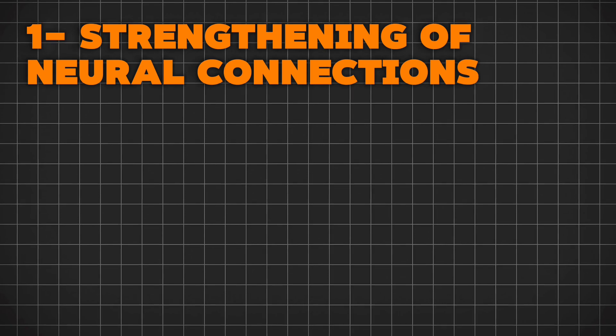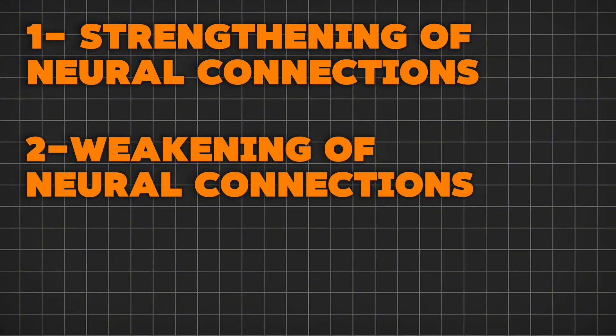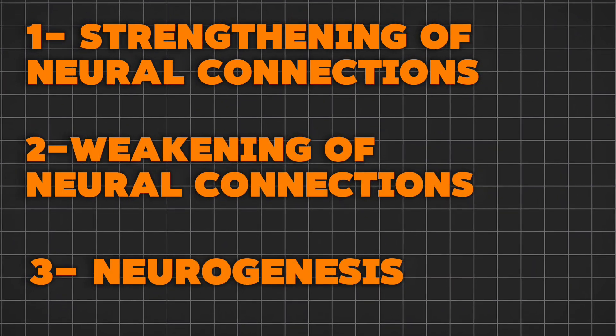So, the three ways are the strengthening of neural connections, second, the weakening of neural connections, and third, through neurogenesis, the addition of new neurons.